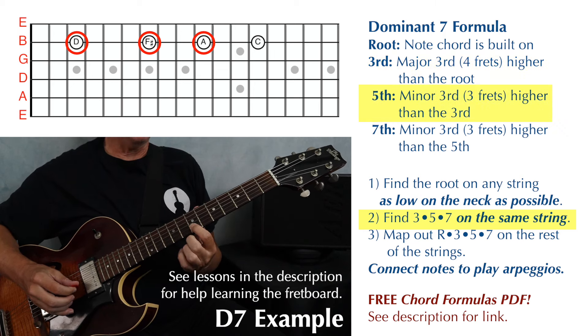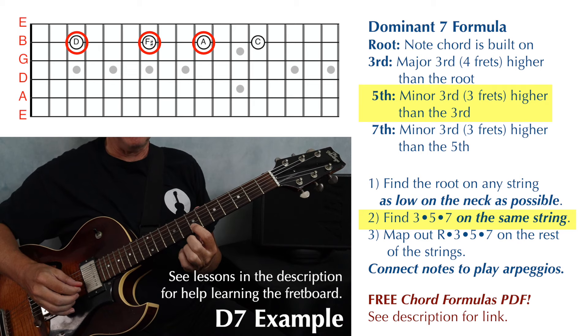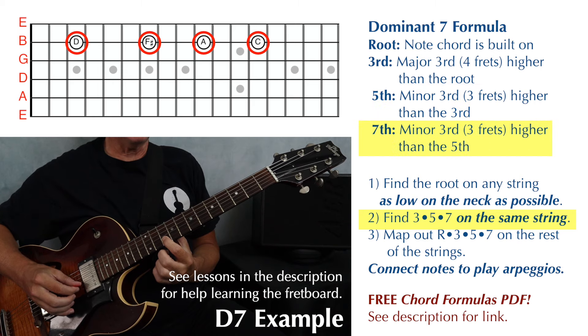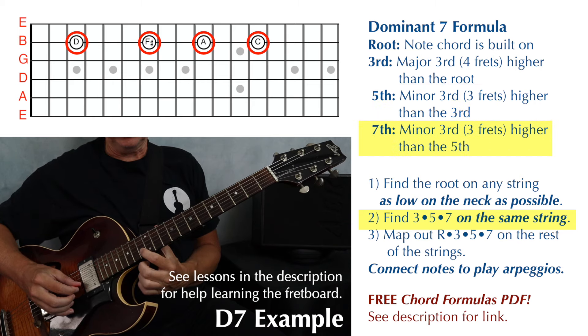To find the fifth of the chord, we stack a minor third on top of that, that is three frets higher. And to find the seventh, we stack another minor third on top of that, which is another three frets higher.